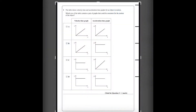Number 2. The table shows velocity-time and acceleration-time graphs for an object in motion. Which row of the table contains a pair of graphs that could be consistent for the motion of the object?